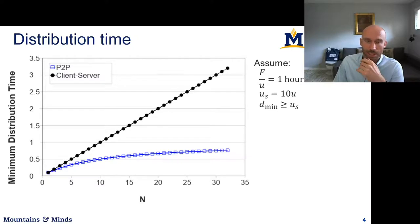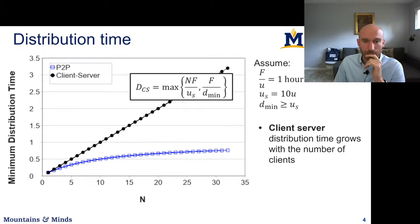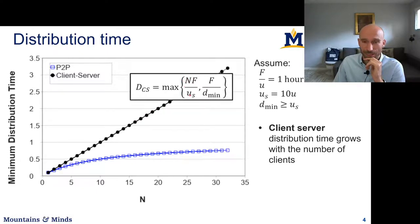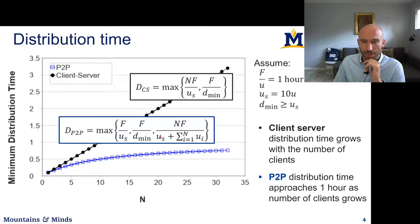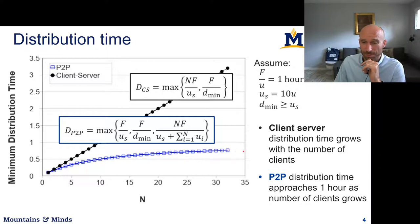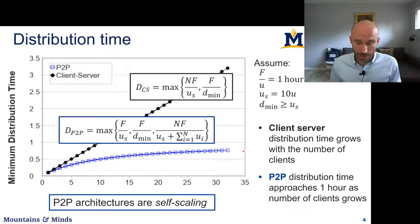We can look at the actual time it takes to upload a file to a number of clients. In the client-server formula, as the number of clients N grows, so does the distribution time, because the N·F/u_s term becomes larger. On a peer-to-peer system, as we have additional clients we have additional upload resources. If you set up the system so that the time to upload a file to one client is one hour, eventually the distribution time will basically approach one hour for the peer-to-peer system. The more clients downloading, the more clients uploading — that's the self-scaling property.